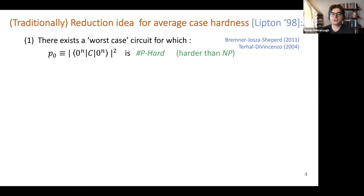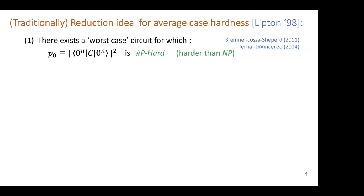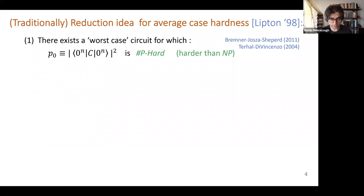The idea is that there exists some circuit—like the Terhal-DiVincenzo circuit from 2004, or IQP circuits naturally connected to Ising models—some known deterministic circuit. You can publish its gates. We call it the worst-case circuit, for which somebody proved that this probability amplitude is indeed #P-hard to some approximation. So they proved that this is hard.